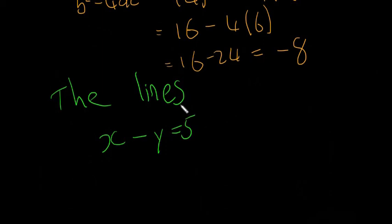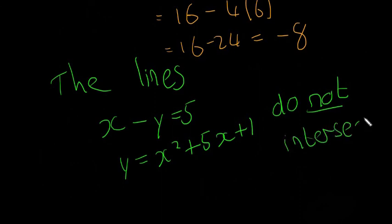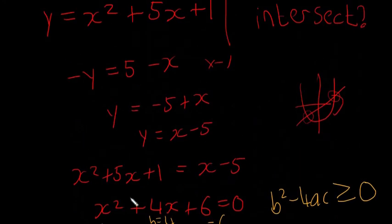Well, it's the line, technically, actually, and the curve. I'm just going to keep it as the lines, and y is equal to x squared plus 5x plus 1 do not intersect. And that's all because when we mix them together, and we get our equation here, x squared plus 4x plus 6,